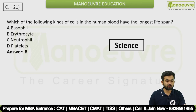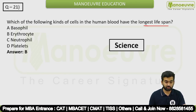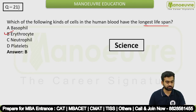Question 21: Which type of cell in human blood has the longest lifespan? The answer is erythrocyte — option B is correct. This is a science-related question.